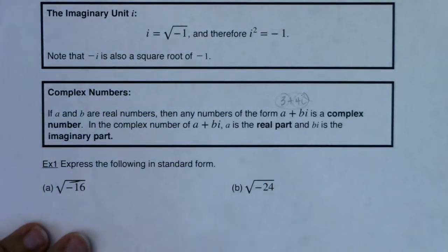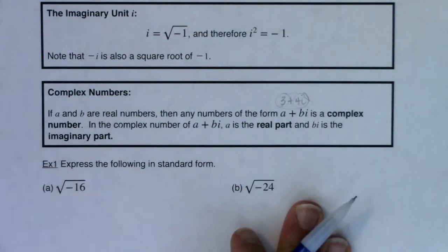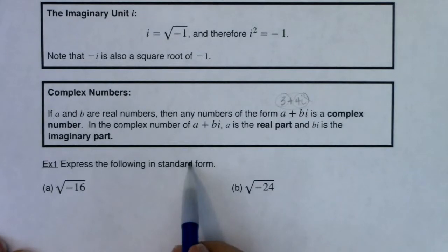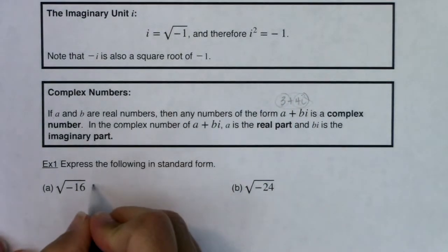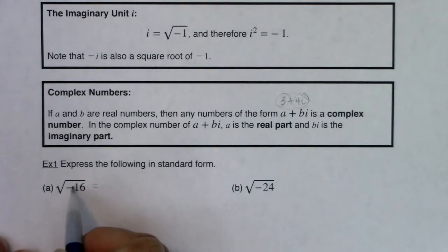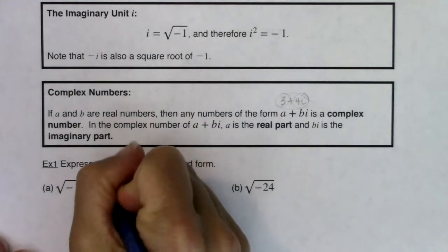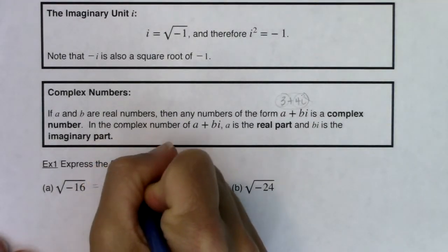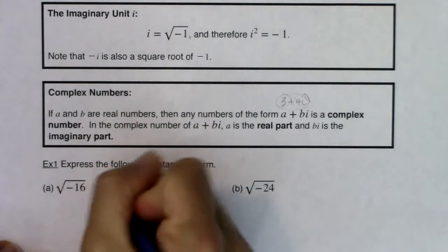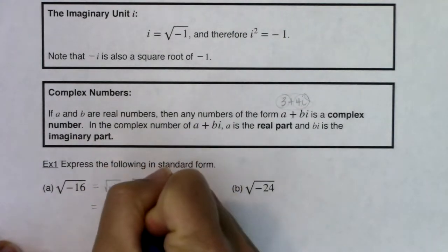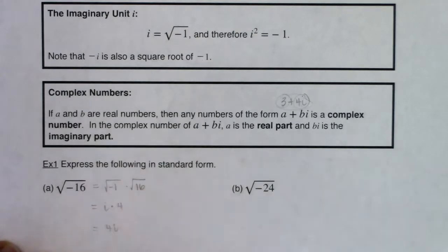All right, so with that, let's take a look at these examples in example one. So it says express the following in standard form. So in standard form, it means I want to get it down to a plus bi if it exists. Again, if it's got no real part, if it's just bi, which it will be for these, then we would just call it an imaginary number. So this is how this works. When you take a look at the square root of negative 16, the first thing you want to do is address that square root of the negative. All right, so this is like saying the square root of negative one times the square root of 16. All right, so address the fact that you are taking the even index of a negative number. And then you know the square root of negative one to be i. You know the square root of 16 to be four. So this answer is ultimately 4i.